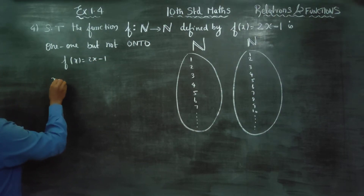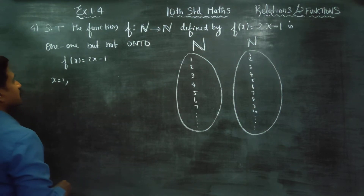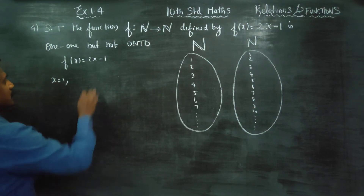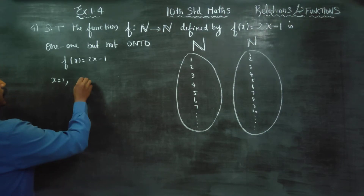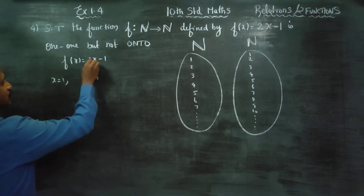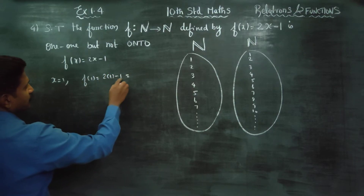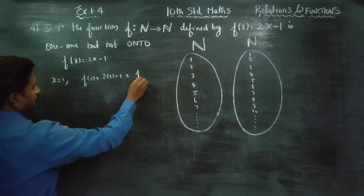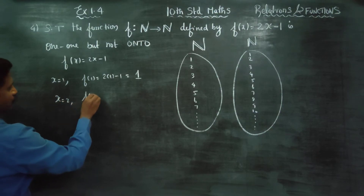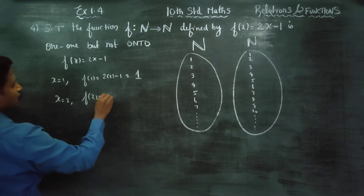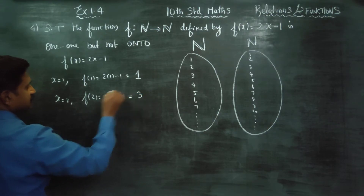Let's start with x equal to 1. Substituting, f of 1 is equal to 2 into 1 minus 1 — that is 2 minus 1, which is 1. Then x is equal to 2: f of 2 gives 2 times 2 minus 1, which is 4 minus 1, so the answer is 3.